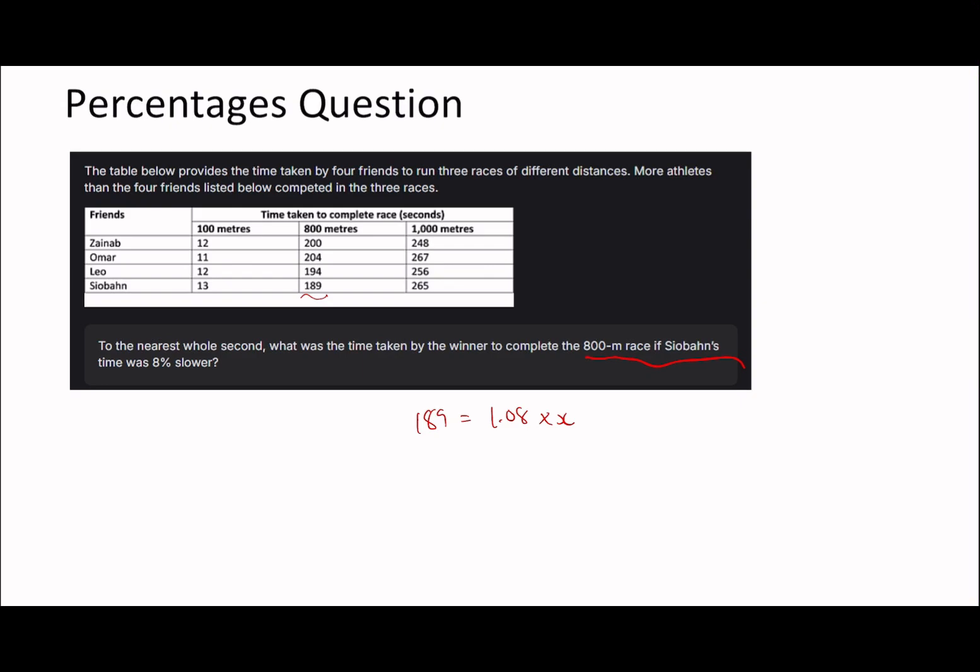I know it says 8% slower, but that basically means she took 8% more time. Because timing is dodgy, 8% slower means she took 8% more time. So 189 divided by 1.08 is 175, which equals x. It's a more simplistic question, but the reason I put it in here is because people can get tripped up. They might put 189 equals 0.92 times x, which will be wrong. This converts into 2 minutes and 55 seconds.